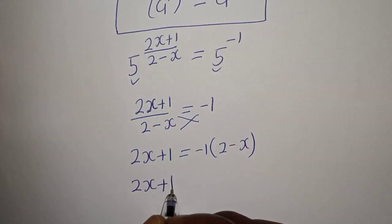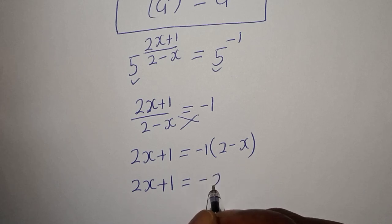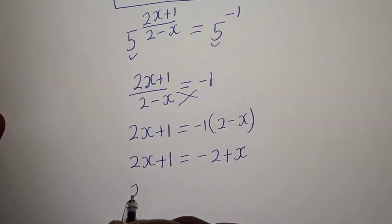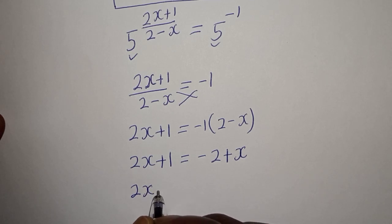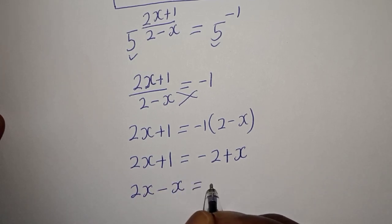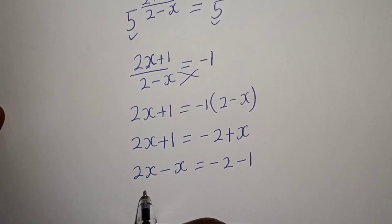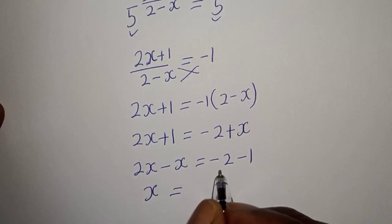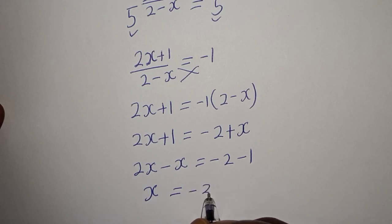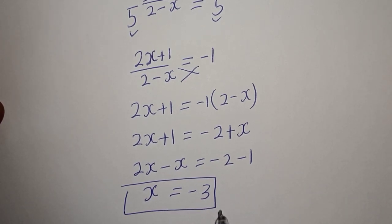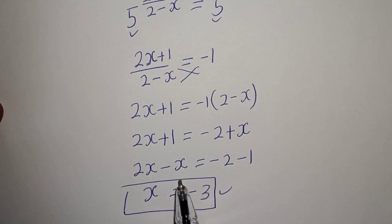Then 2x minus x equals minus 2 minus 1, and 2x minus x gives x equals minus 2 minus 1, that is minus 3. This is the final answer. Thank you for watching — don't forget to like, share, comment and subscribe. Bye bye!